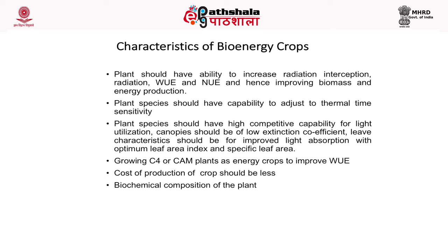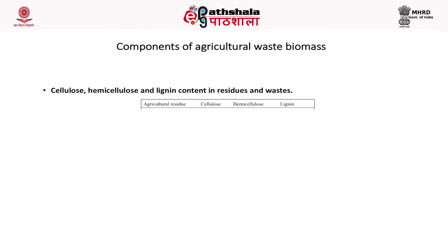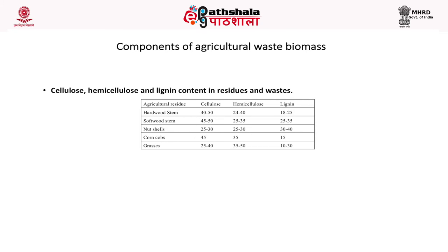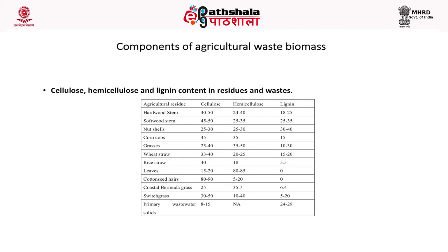The biochemical composition of the plant is also an important characteristic. You can see in this table the components of agricultural waste biomass — they are rich in cellulose, hemicellulose, and lignin. For example, a hardwood stem has a composition of 40–50% cellulose, 24–40% hemicellulose, and 18–25% lignin, while softwood stem has more lignin content.